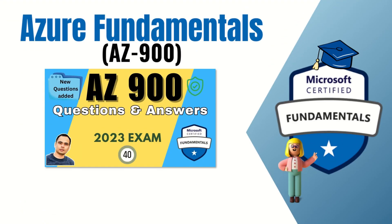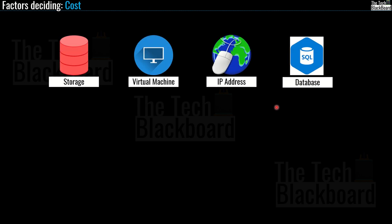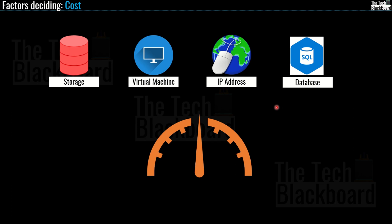Whenever you provision any resource, Azure creates a metered instance for that resource. It is this meter that tracks all the resource usage and generates a usage record that is used to calculate your bill.